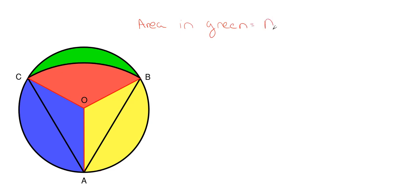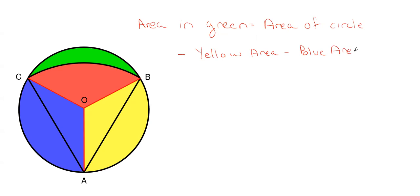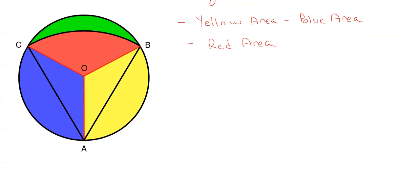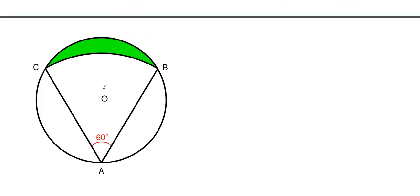We would have our overall circle, which is circle O, and then we would have to subtract off the yellow area, subtract off the blue area, and also subtract off the red area. In order to get most of this information, we need to know the radius of circle O. Once we get the radius of circle O, this opens up a lot of information we can find very quickly. So let's work on getting the radius of circle O.